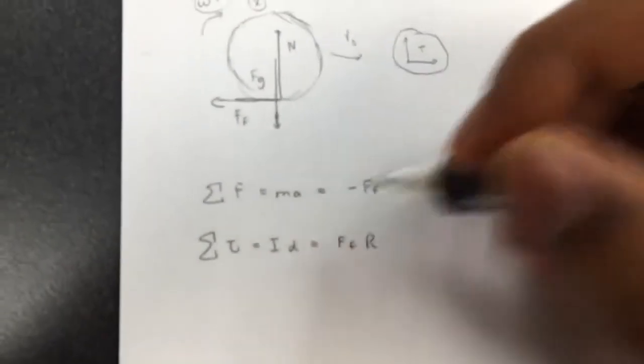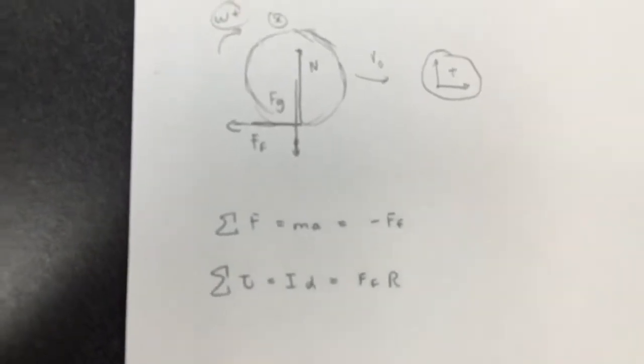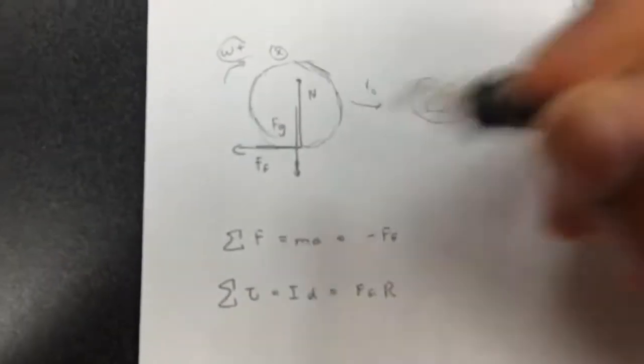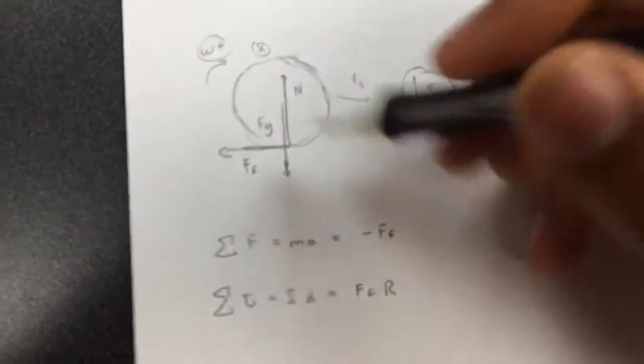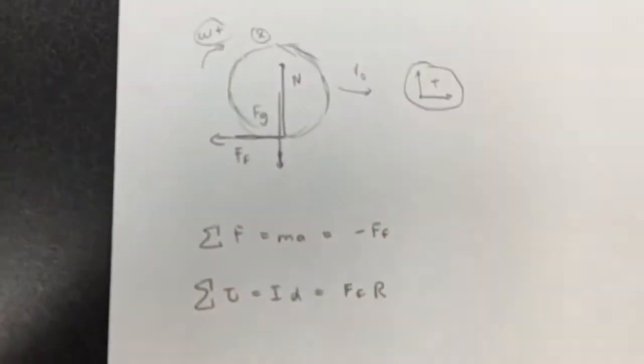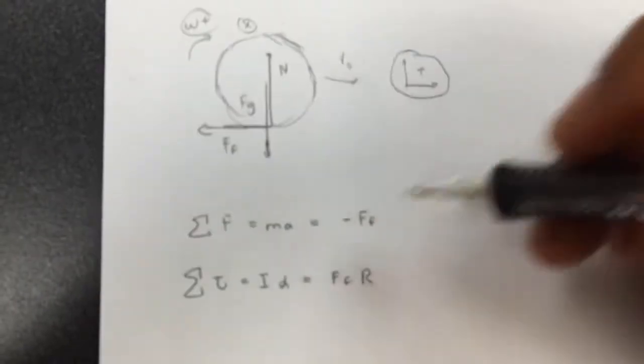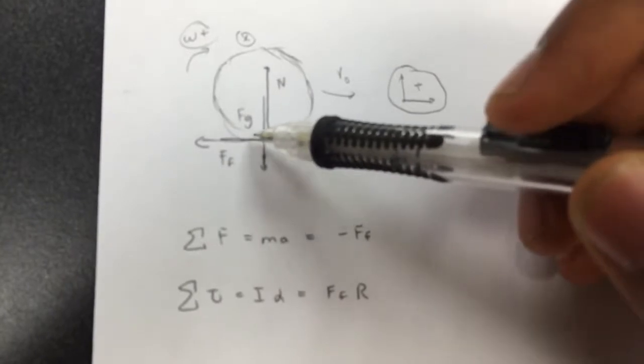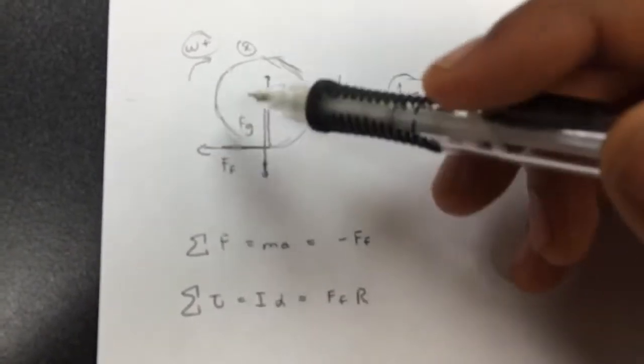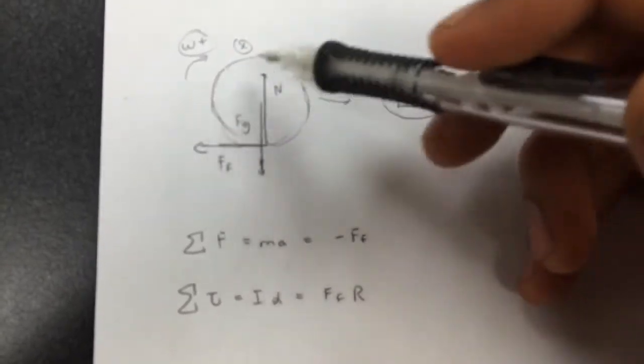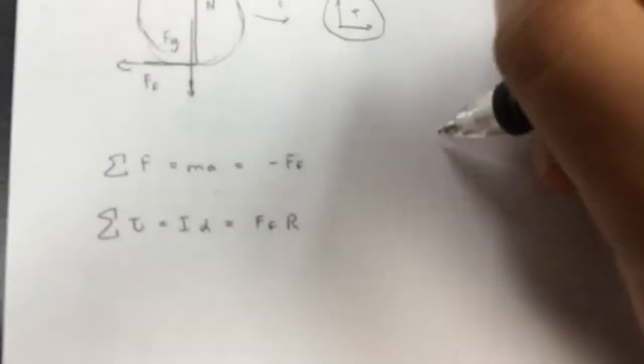So here I have my σF statements and στ statements. So the net force acting on this object is the frictional force. And there's a negative sign here because it acts in the opposite direction as our sign convention, which is to the right. So that's our σF statement. And our στ statement, iα equals ffr, is because ffr is the only torque acting around the center of mass of the body. And it causes a positive change in angular velocity.